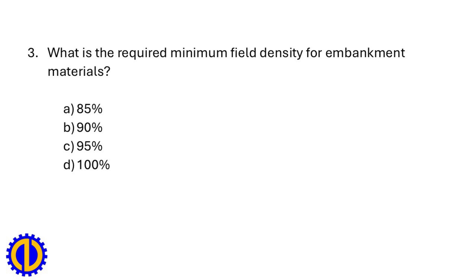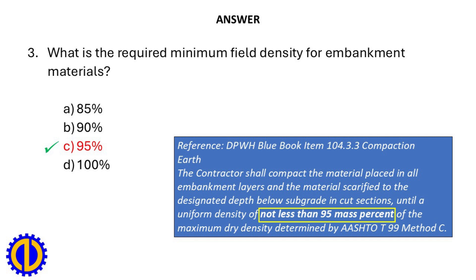What is the required minimum field density for embankment materials? a. 85%, b. 90%, c. 95%, d. 100%. Answer: c. 95%. Reference: DPWH Blue Book Item 104.3.3.3 Compaction — the contractor shall compact material in all embankment layers until a uniform density of not less than 95 mass percent of the maximum dry density determined by AASHTO T99 Method C.